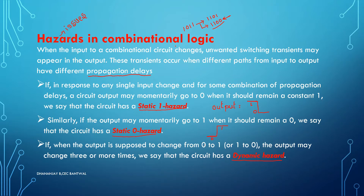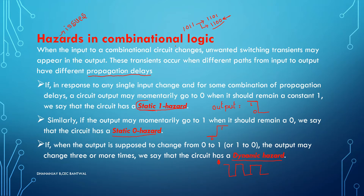Dynamic hazard is the state of the circuit which will be continuously changing — if it is 1 it will become 0, and when it becomes 0 it will become 1. When the output is supposed to change from 0 to 1 or 1 to 0, the output may change 3 or more times. This kind of hazard is called dynamic hazard. Dynamic hazard is basically a combination of static 1 and static 0 hazard.